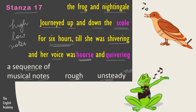This was unusual for the nightingale and so it became tired and shivering. Her voice also became rough and unsteady. The poor nightingale bird got tired because of the long hours of training. Added to this, it had not wanted to sing in the rainy weather and had opposed the frog earlier, but the frog had forced her. All this took a toll on the nightingale — she started shivering and her voice became rough and unsteady.